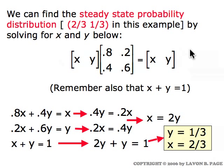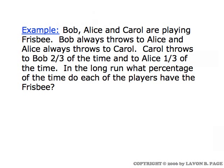Now let's move to a completely new example to see what this really means in practice. We'll go to Bob, Alice, and Carol playing frisbee with each other. Bob always throws the frisbee to Alice, and Alice always throws it to Carol. Carol will throw it to Bob two-thirds of the time and to Alice one-third of the time. In the long run, what percentage of the time does each of the players have the frisbee?